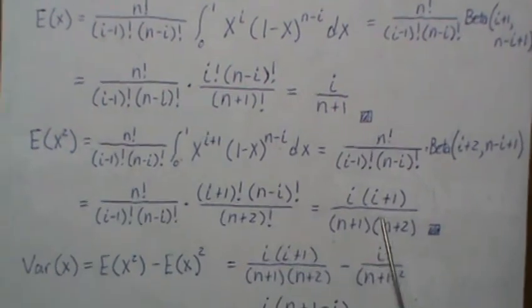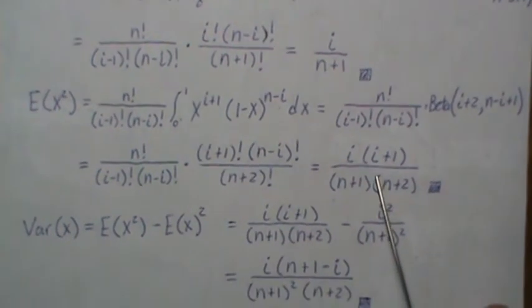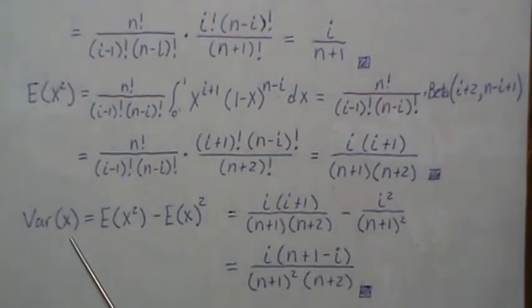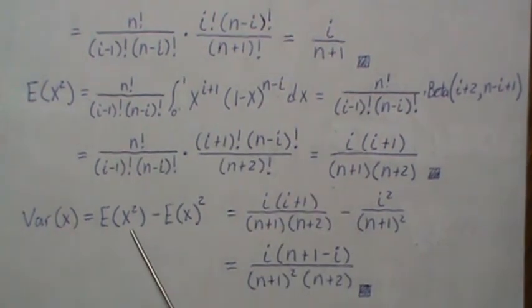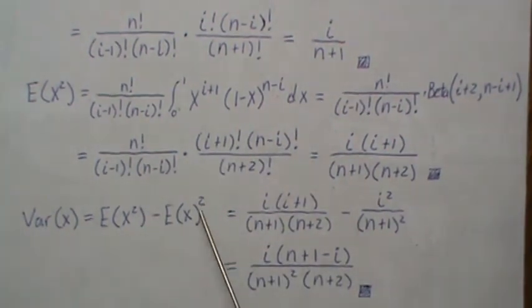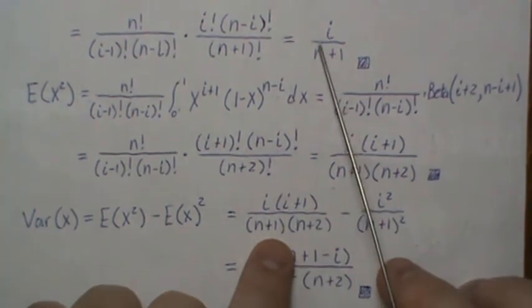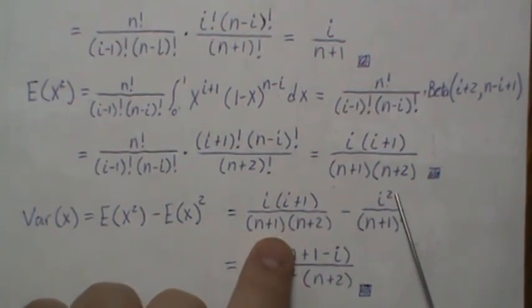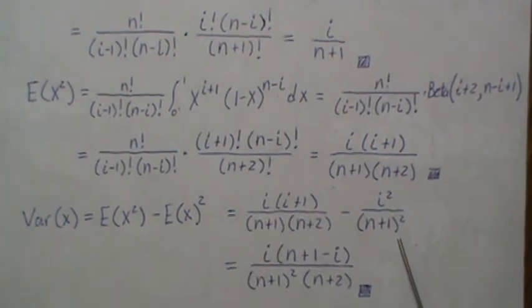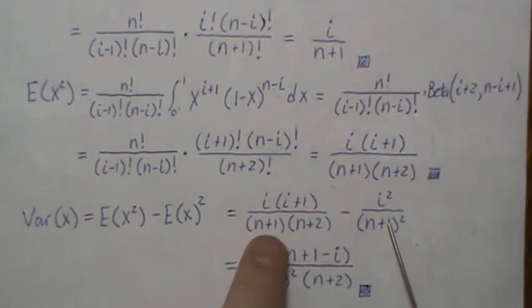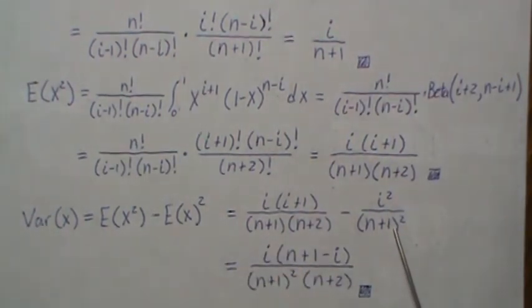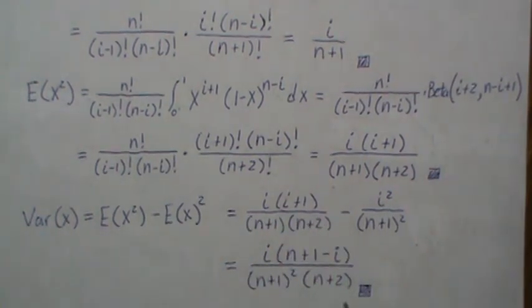And now we can calculate the variance of the ith order statistic. So it's the second moment minus the mean squared. So we plug in what we know. And then this, of course, is squared. We get like denominators and simplify it, and it simplifies to this. So that's the variance of the ith order statistic.